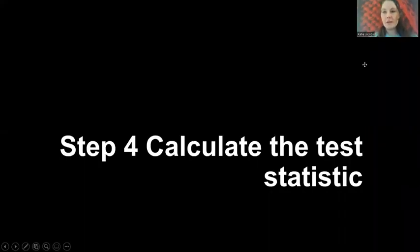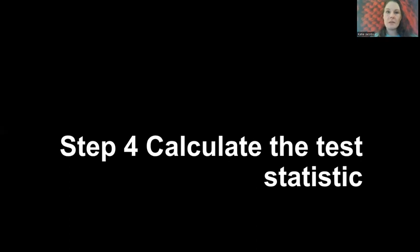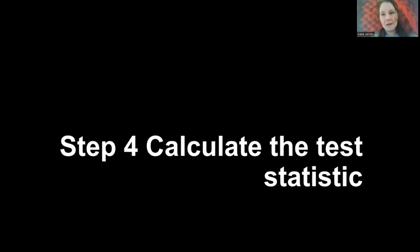Step four is to calculate the test statistic. Every analysis has a test statistic associated with it. For the one-sample z-test, we'll plug our data set into its own formula to solve for the test statistic. In this case, our test statistic is telling us how big the difference is between our sample mean and our population mean.